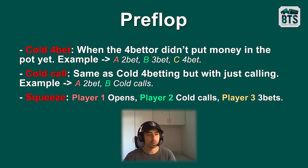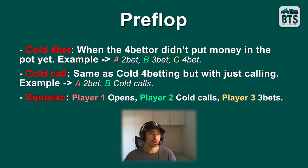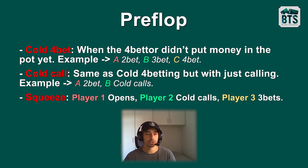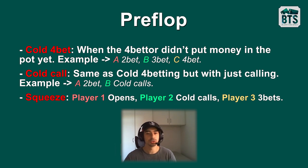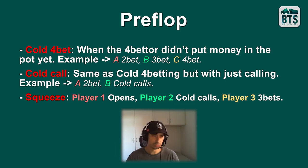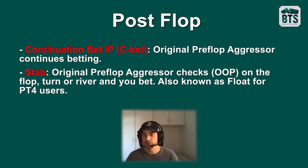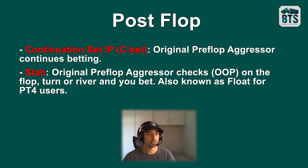A squeeze is when player one opens, player two cold calls, and then player three three-bets. This can happen very often — for example, under the gun opens, button calls, and then the big blind three-bets over both opponents. Or button opens, small blind flats, big blind squeezes it up. There are also a few postflop terms that people are not that aware of, so we'll take a look into those.